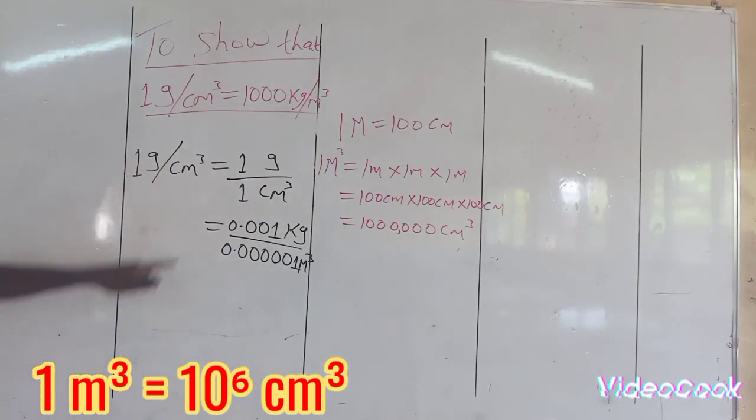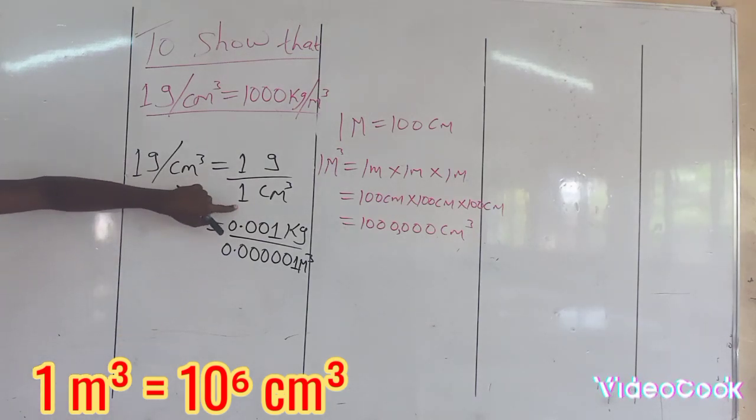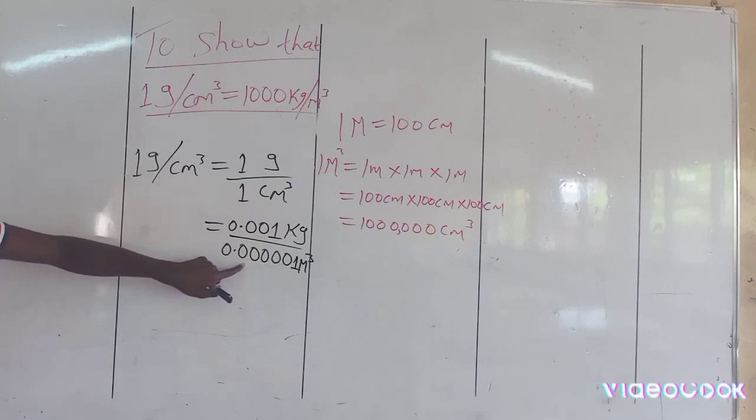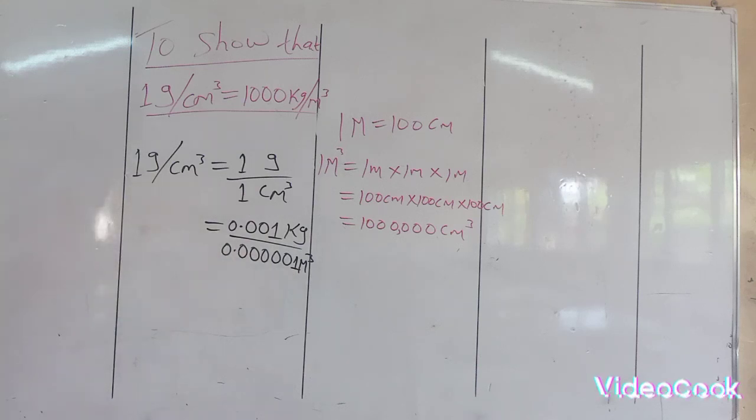That's what we are saying: if you want to convert 1 centimeter cubed into cubic meters, it is 0.0000001 cubic meters.